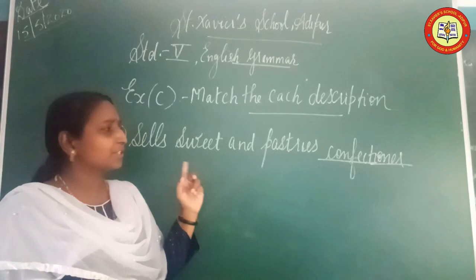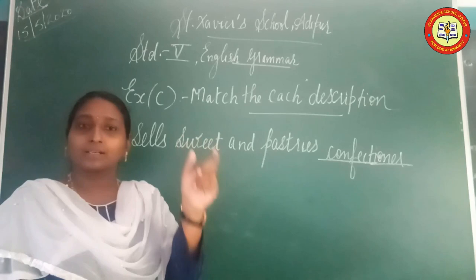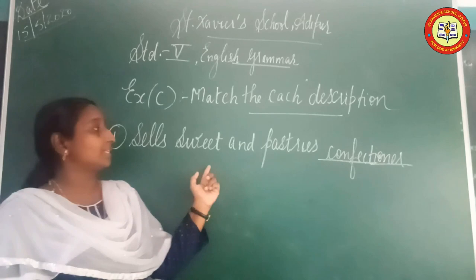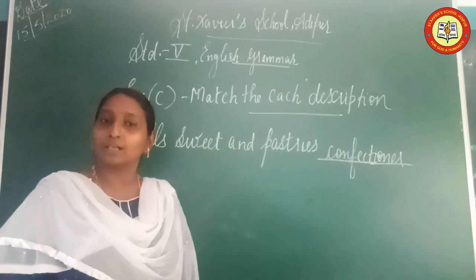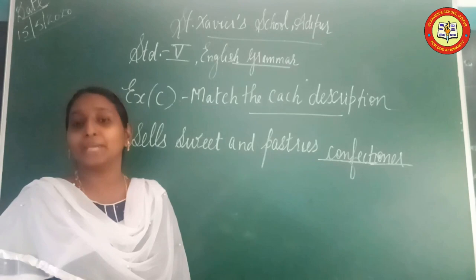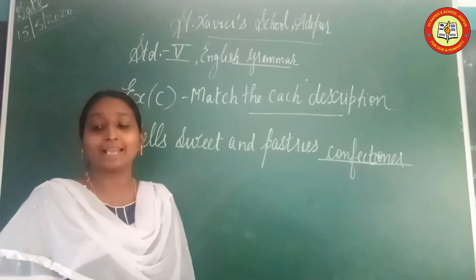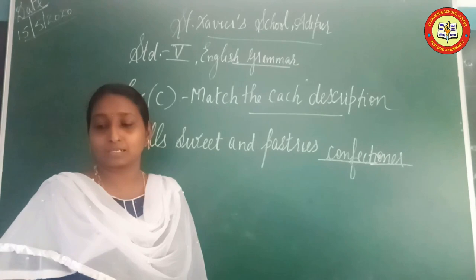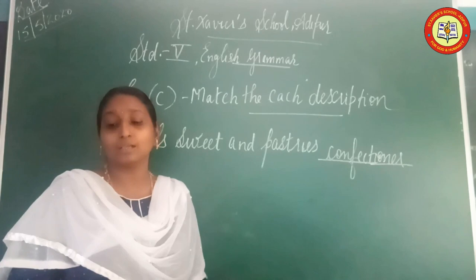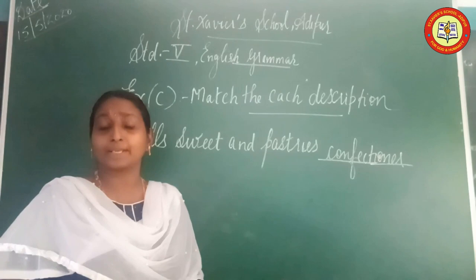Exercise C: Match each description. A help box is provided. First: Sells sweets and pastries — Confectioner. Second: Flies an aeroplane — Pilot. Third: Bakes bread — Baker. Fourth: Acts in plays or movies — Actor. Fifth: Always expects good things to happen — Optimist. Sixth: Does not eat meat — Vegetarian.